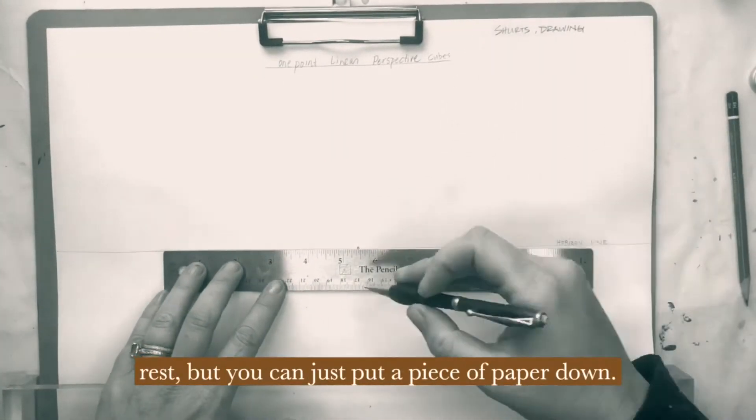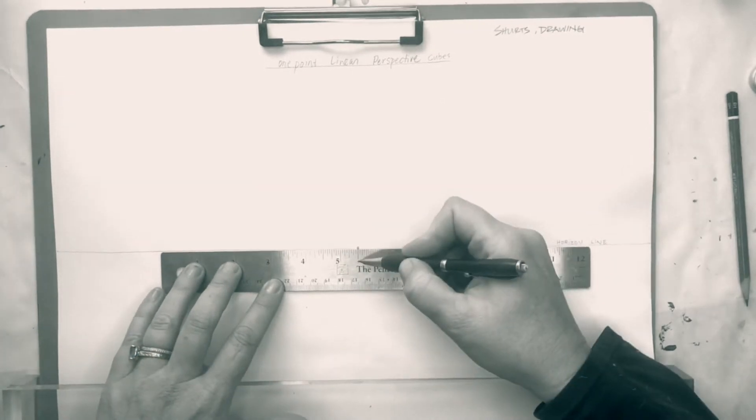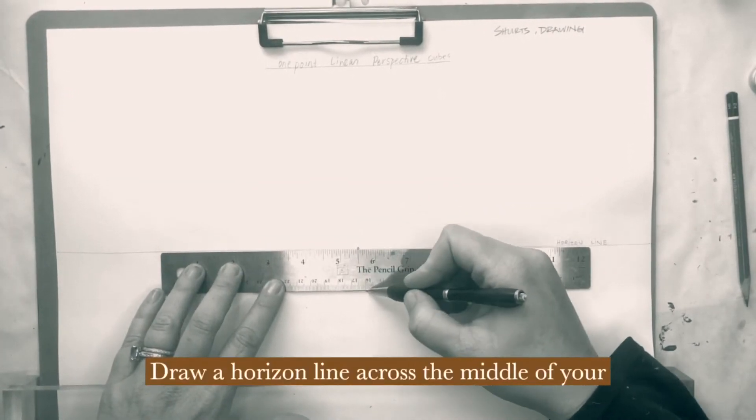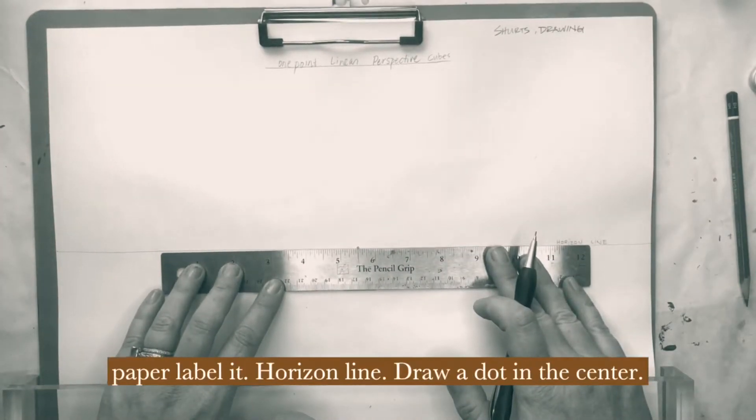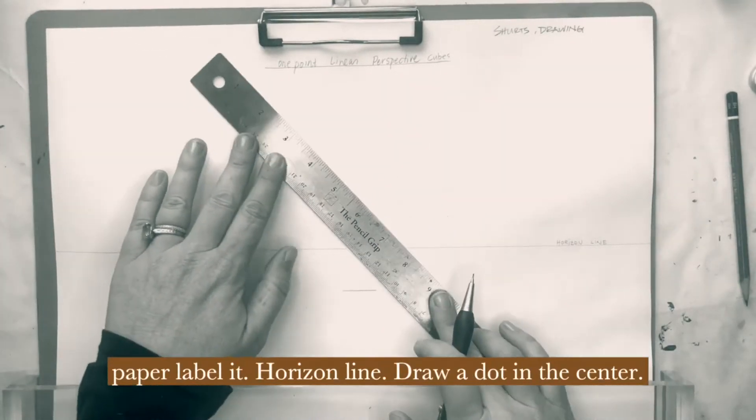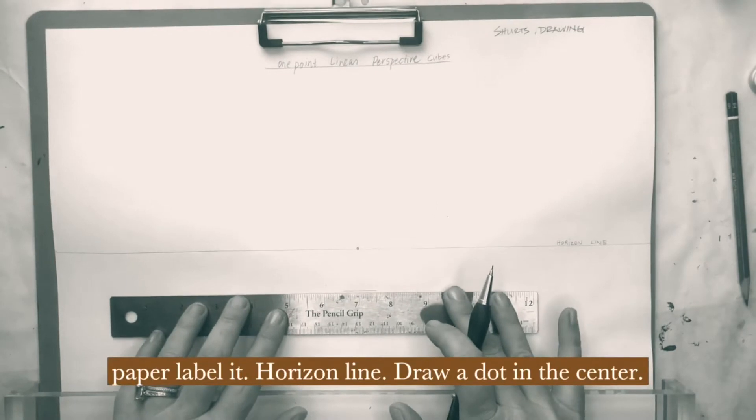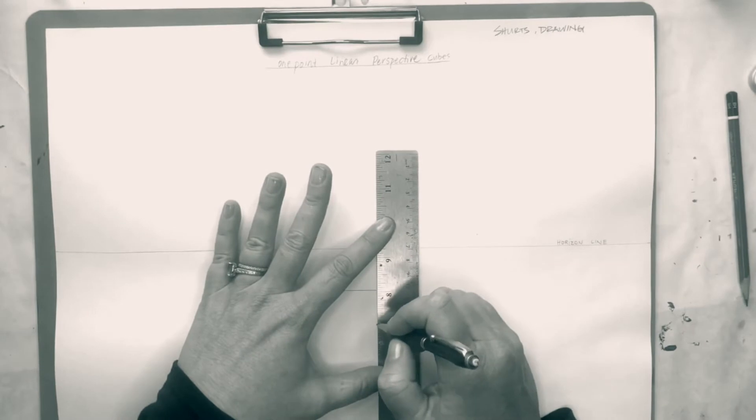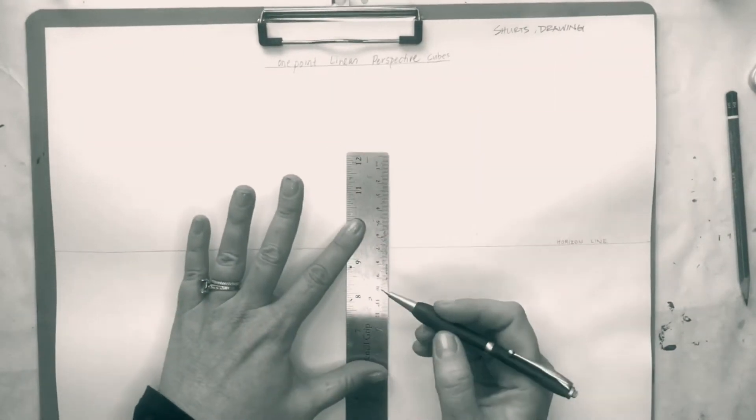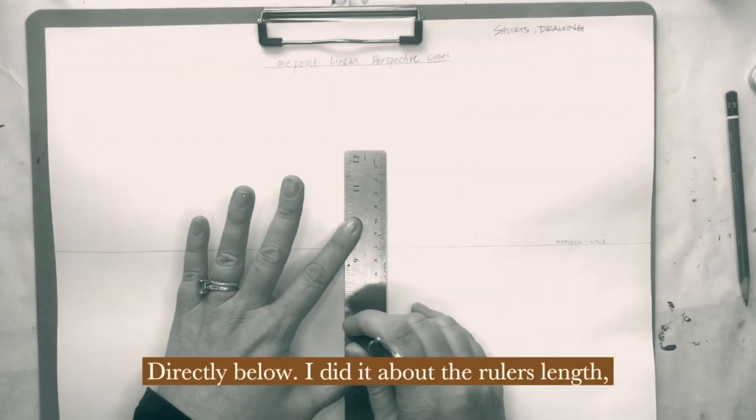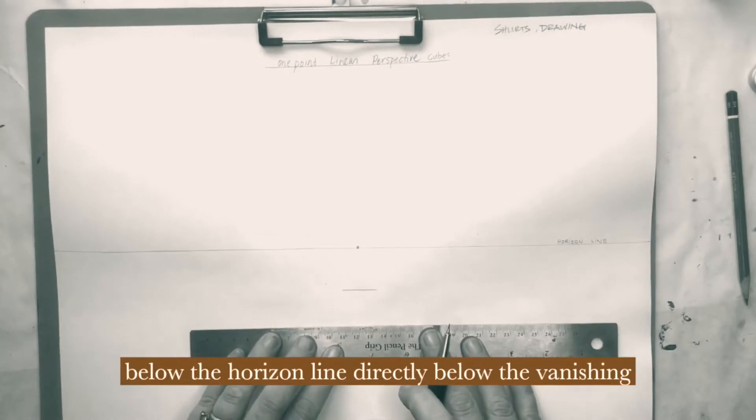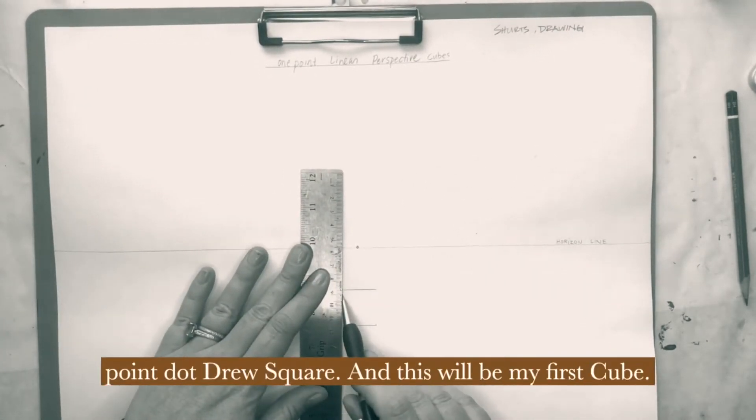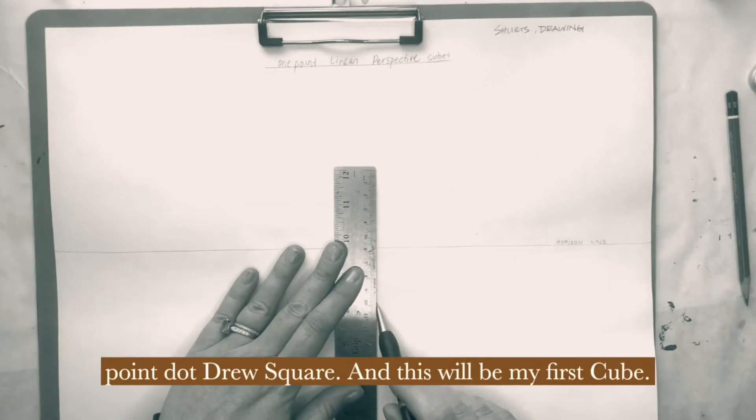Draw a horizon line across the middle of your paper. Label it horizon line. Draw a dot in the center. That's your vanishing point. Directly below, I did it about the ruler's length below the horizon line, directly below the vanishing point dot. Draw a square. And this will be my first cube. I'll be making nine in all, and so will you, I hope.